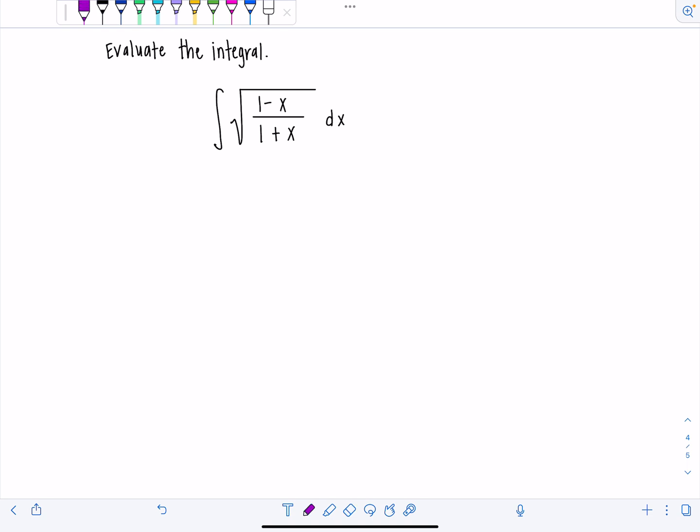So what we're going to do is multiply both numerator and denominator by radical one minus x. So I'm going to split up the radical sign first. And then I'm going to multiply again by rad one minus x.